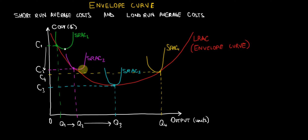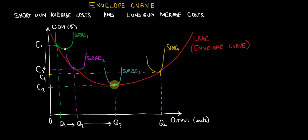We go from our second cycle to the third cycle on the blue curve. On the blue curve we are achieving an average cost of C3, which is the lowest average cost on our graph.